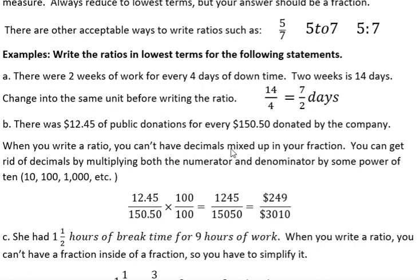So whatever stated first in a ratio is what we put on the top. So 12.45 on top, and 150.50 on the bottom. And then I can't leave it this way because there's decimals inside the fraction. I want to move that decimal point two places. So I multiply by 100 because 100 has two zeros, and that means I'm going to move my decimal point two places to the right. That gives me 1,245 over 15,050. And then of course, I have to reduce that. And you can divide both of those by five to reduce that. And it ends up with $249 for every $3,010, $249 of public donations for every 3,010 from the company.